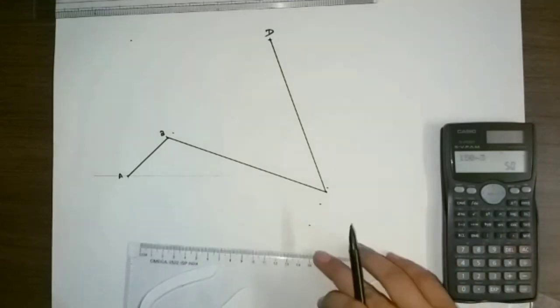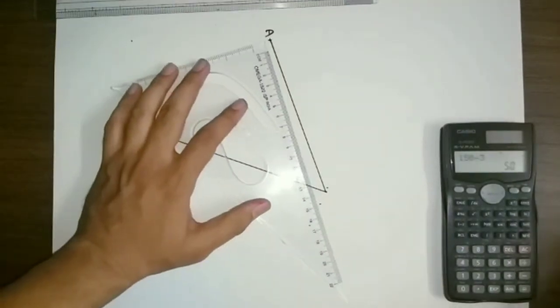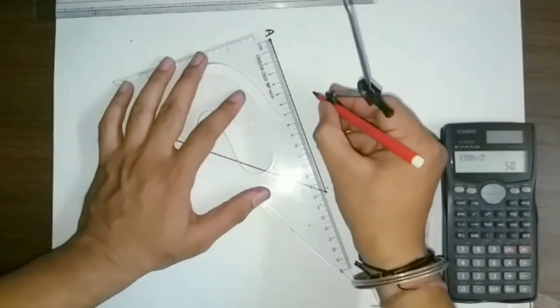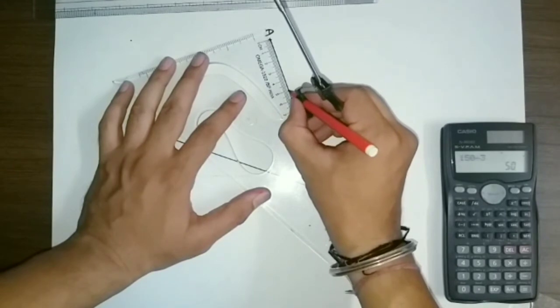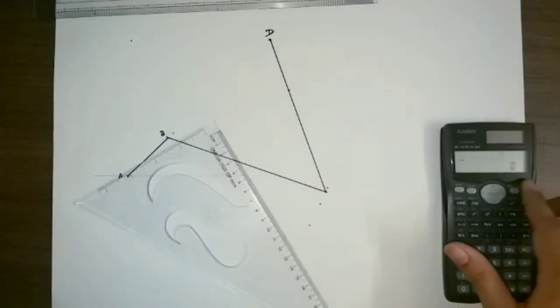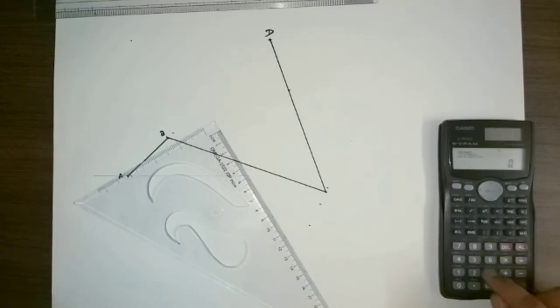Now I will mark point E. That is 150 mm from point D, so we'll take this scale again, divide by 3, that is 50. I will mark 5 centimeters from point D, so we'll get point E.